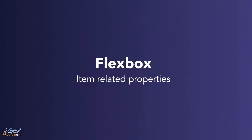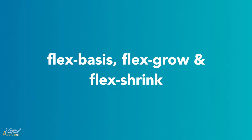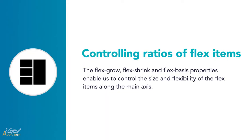In the last videos of our Flexbox section, we were talking about the properties that affect the container. Now we will look at the properties that affect the flex items. In this section of the course, we'll be talking about how we can control ratios of flex items along the main axes. We'll be looking at flex grow, flex shrink, and flex basis. These properties are applied to the flex items, and they enable us to control the size and flexibility of the items along the main axes. Fully understanding how these properties work in regards to growing and shrinking items is the real key to mastering Flexbox.